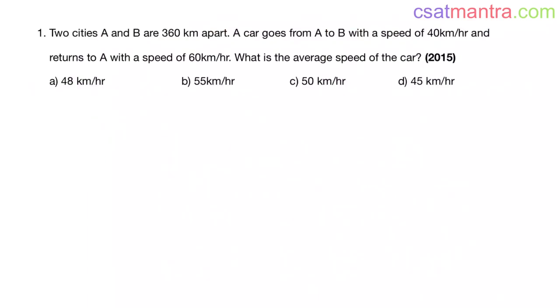This is a 2015 question. Two cities A and B are 360 kilometers apart. A car goes from A to B with a speed of 40 kilometers per hour and returns to A with a speed of 60 kilometers per hour. What is the average speed of the car?